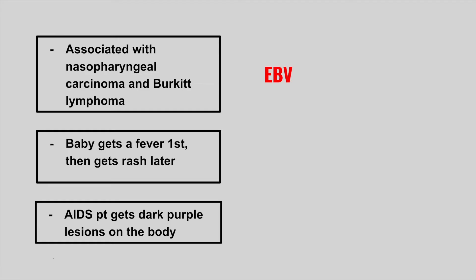The next patient is going to be a baby that gets a fever first, then gets a rash later. This is HHV 6 and 7 causing roseola — look for fever first. The next patient has AIDS and gets dark purple lesions on the body. This is HHV 8 causing Kaposi sarcoma.